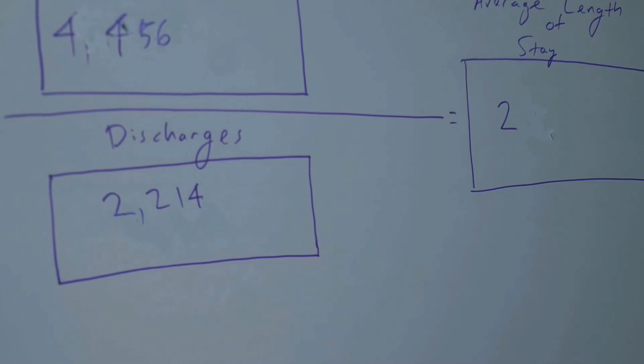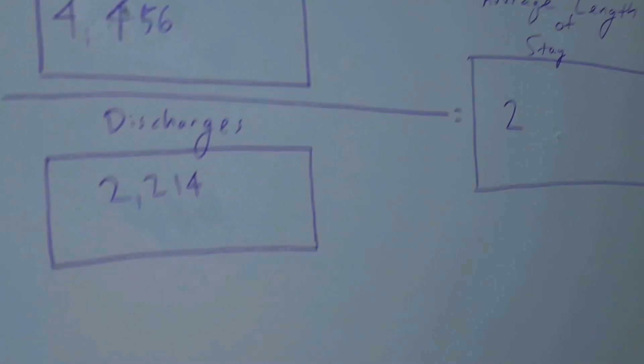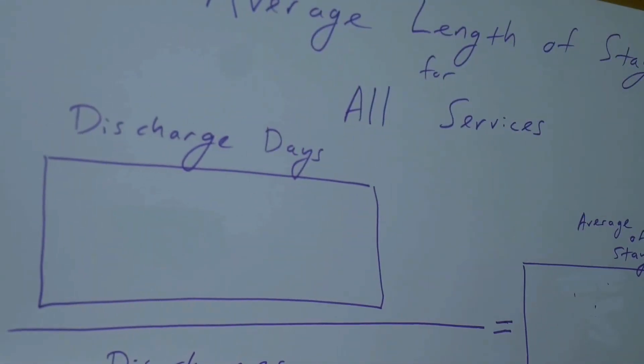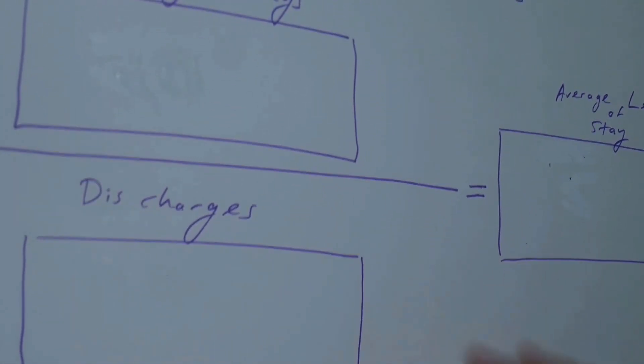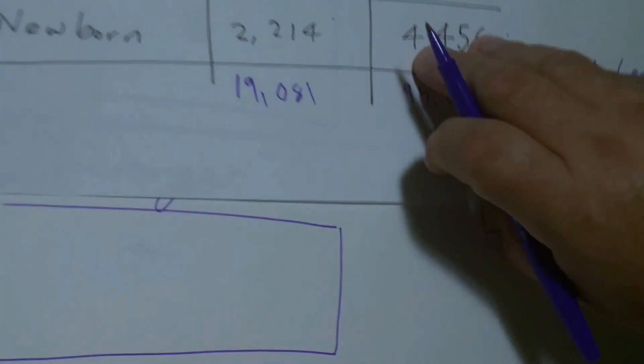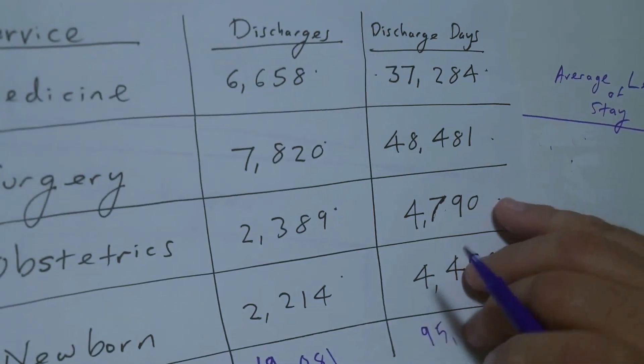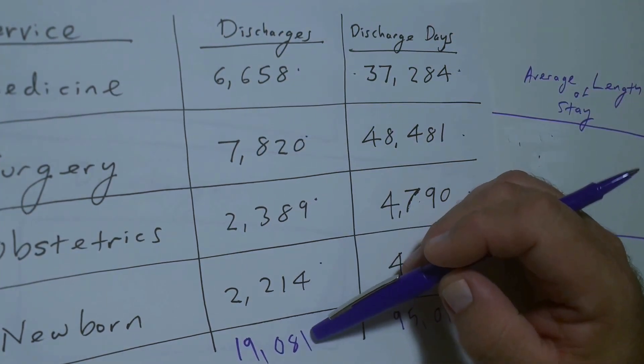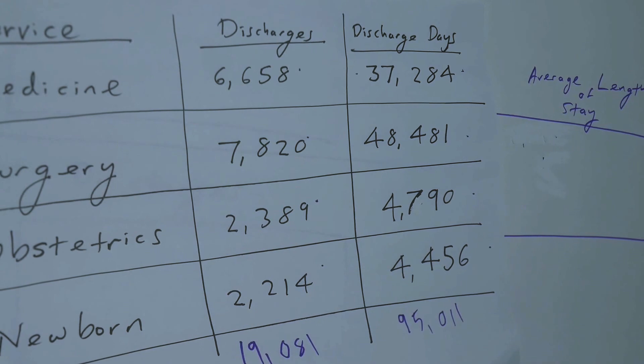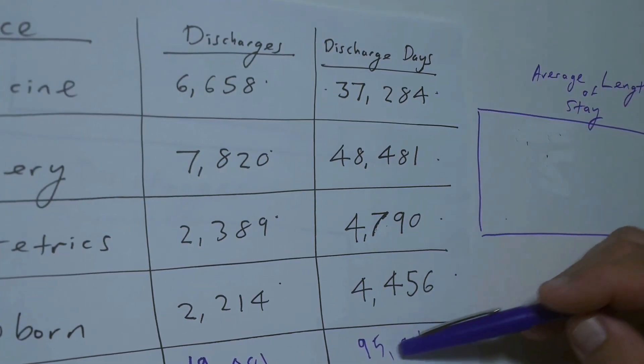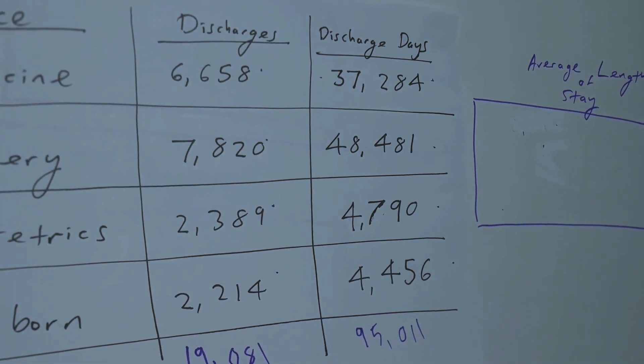Lastly, we can calculate it for all services. We're going to use the same formula, the same boxes, this time it's for all services. As I told you, I already totaled them up. I took the column for discharges for all the services and I added them up, and that was 19,081. And I added up all of the columns for discharge days and got 95,011. So I'm going to use those numbers here.